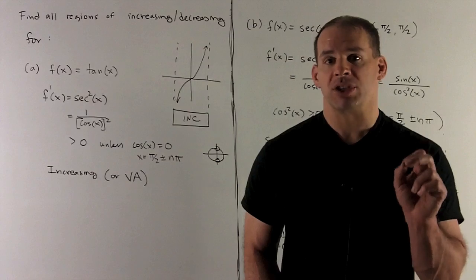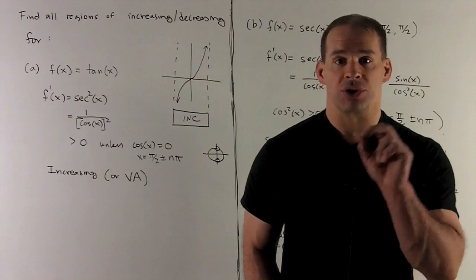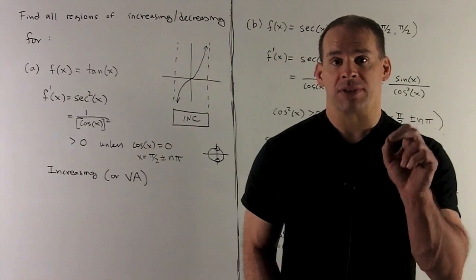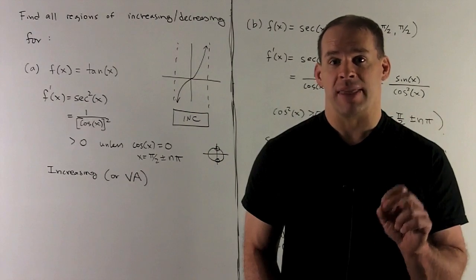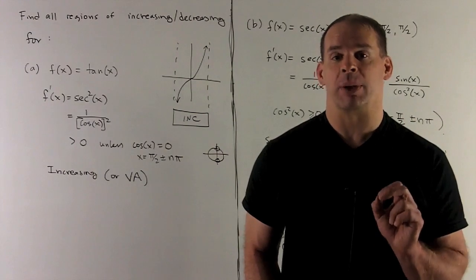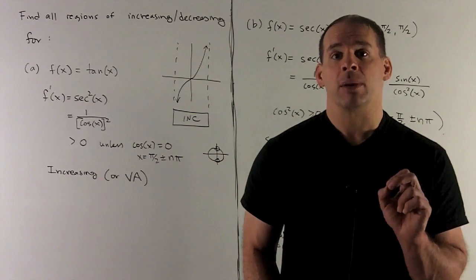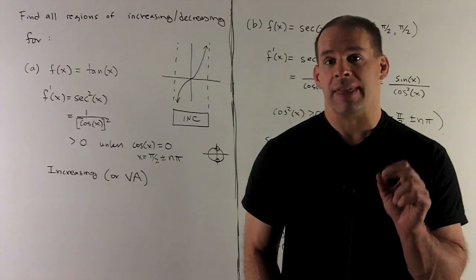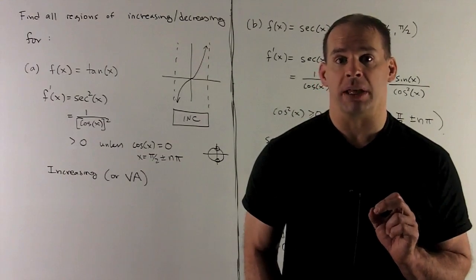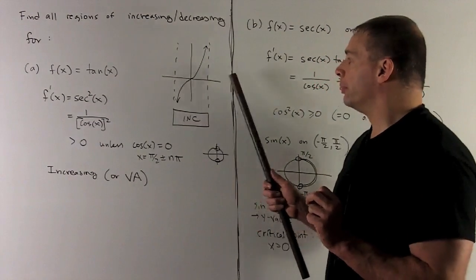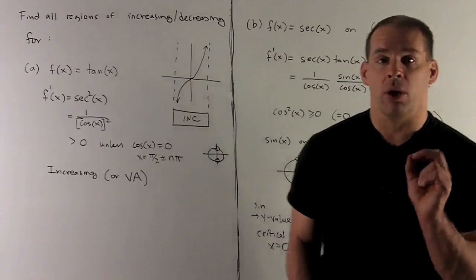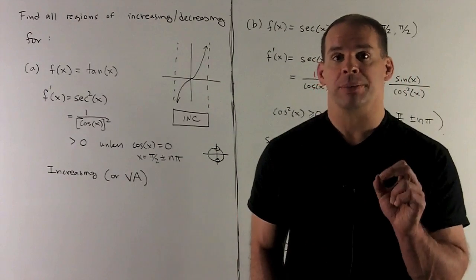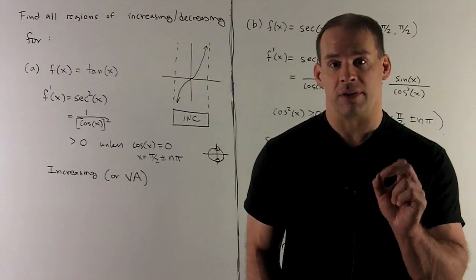Why is that? Well, cosine is going to be the x value on the unit circle. And if our x value is equal to 0, then we're on the y-axis, and that's going to be pi halves, minus pi halves. So you'll note there, if we look at the graph, that's where the vertical asymptotes are going to show up anyway. So this is just going to confirm what we already know from the graph of tangent. It's going to be increasing wherever it's defined.